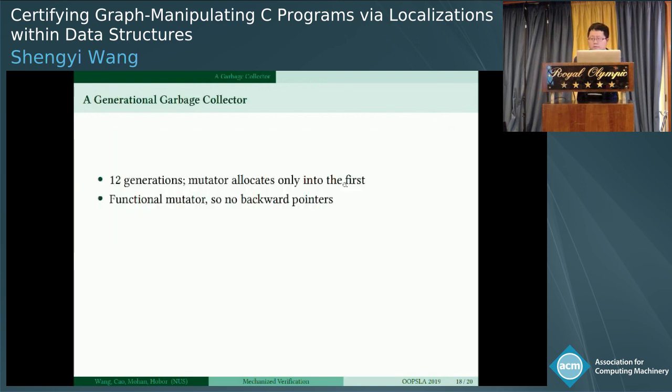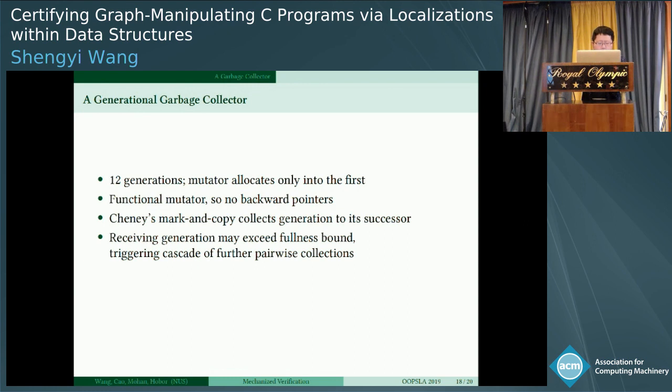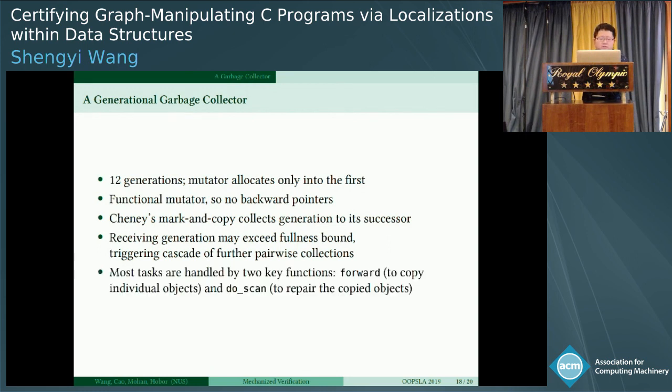And this is garbage collector. For the sake of time, I just mention it briefly. It contains 12 generations. For functional programming language, it's functional mutator, no backward pointers. It uses standard Cheney's algorithm, mark and copy collect. Once one generation exceeds the bound, it will trigger cascade forward collections. It takes two key functions.